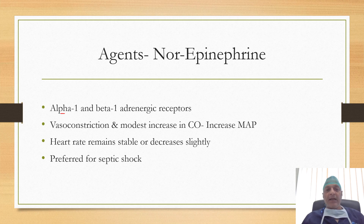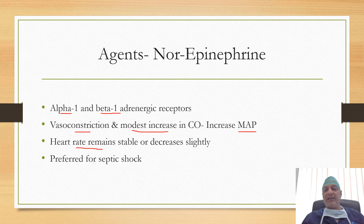Norepinephrine acts on alpha-1 and beta-1 receptors. By alpha-1 action it causes vasoconstriction, and by beta-1 action it causes a modest increase in cardiac output. The ultimate effect is an increase in mean arterial pressure. Heart rate remains stable or decreases slightly, and it is preferred for septic shock.